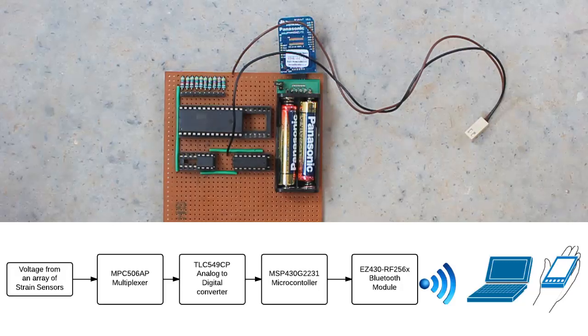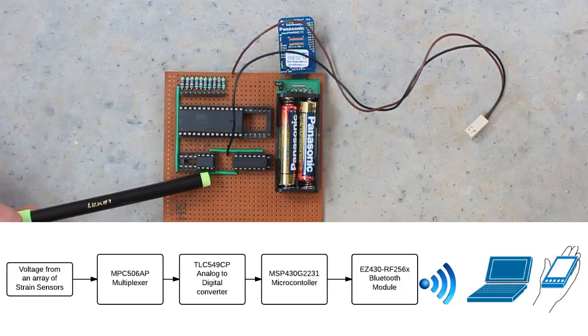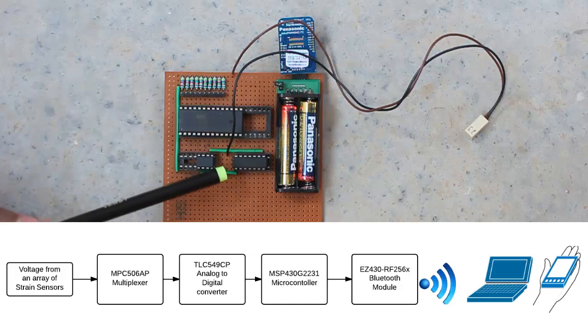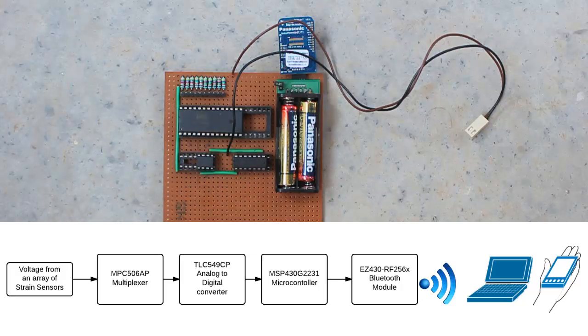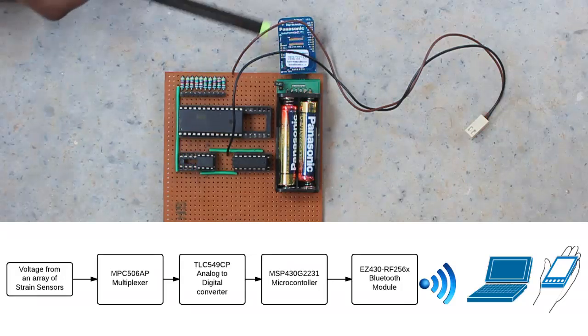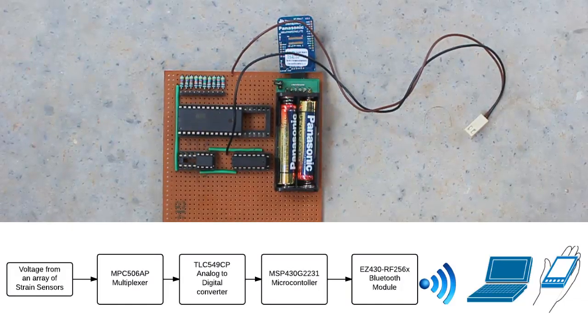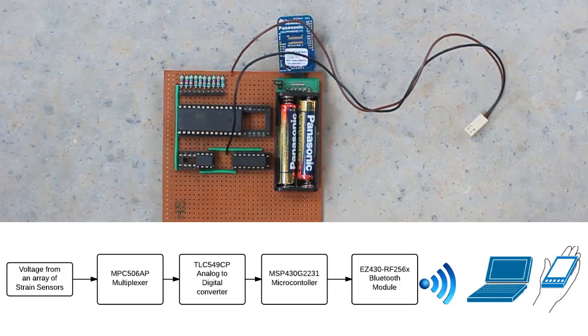The voltage change is multiplexed by TI's MUX506AP multiplexer. Then the analog data from the 10 sensors is time multiplexed and sent to TI's TLC549CP analog-to-digital converter. The ADC digitizes the voltage and quantizes it into an 8-bit representation. This is fed to TI's MSP430G2231 microcontroller. The microcontroller serializes the data and sends it using UART protocol to the Bluetooth module. The TI EZ430-RF256X Bluetooth module can transmit the data to a laptop or smartphone for further processing.